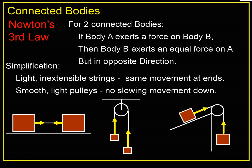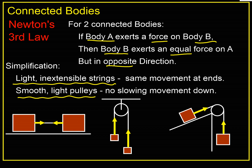In summary for connected bodies: Newton's third law is the most important principle — the force that body A exerts on body B means body B exerts an equal and opposite force back on body A. To make all calculations work simply, we assume light inextensible strings and smooth light pulleys.